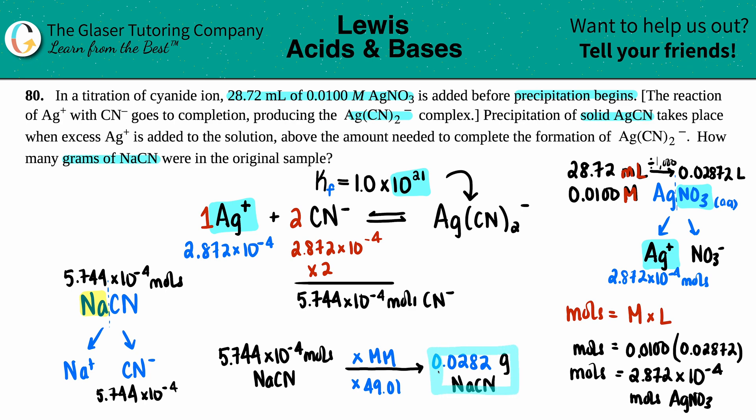And that's how many grams of the sodium cyanide you needed in order to react completely with that amount of the AgNO3. And this equation or this problem is done.